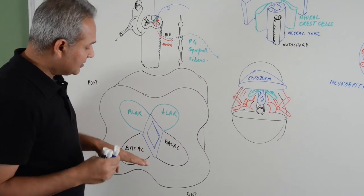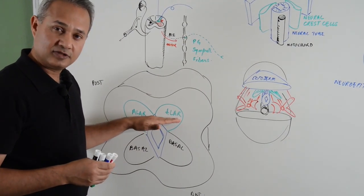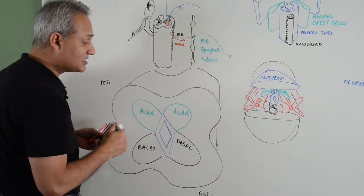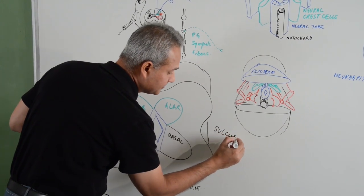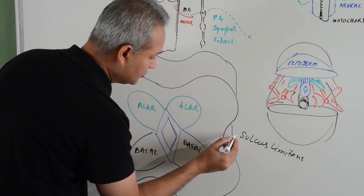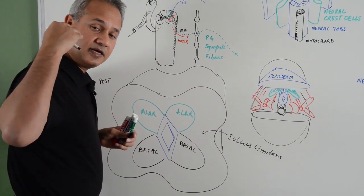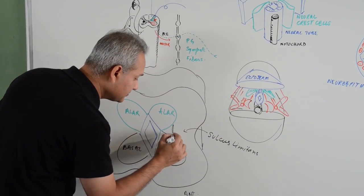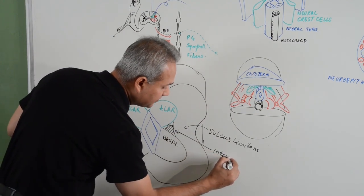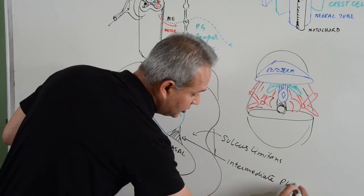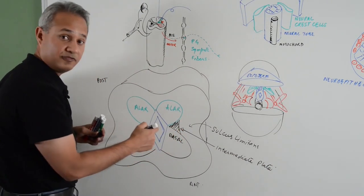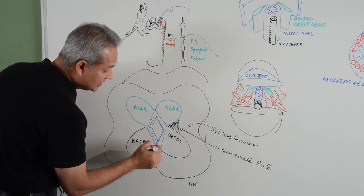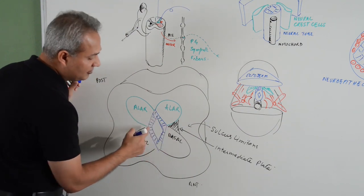You can say from this that the basal plate gives rise to the motor fibers and the alar plate gives rise to the sensory fibers. In the thoracic and upper cervical areas you will also see the intermediate plate developing, which is going to become the intermediolateral horn — which is sympathetic. So now we are seeing the origin of four cell types: neuroepithelial cells giving rise to all others, which in future will become ependymal cells.